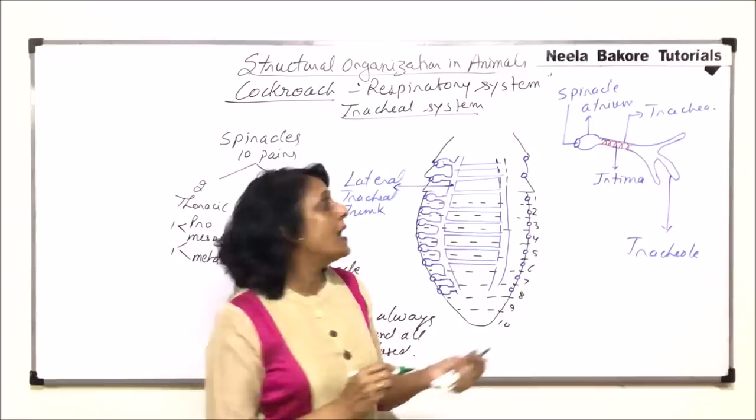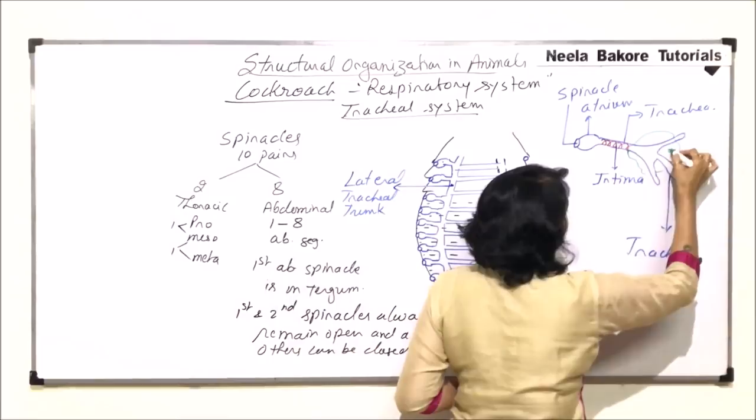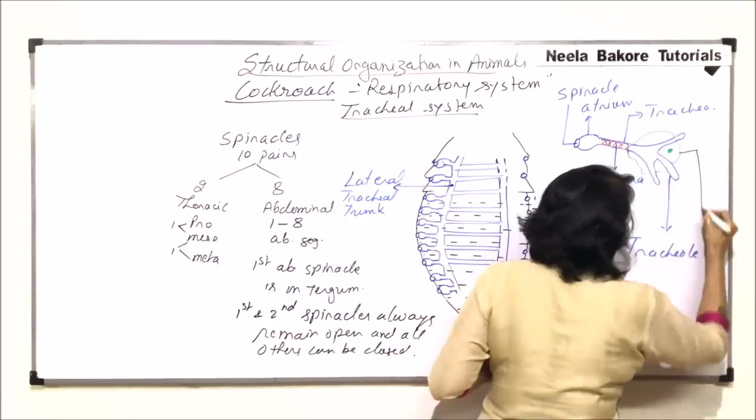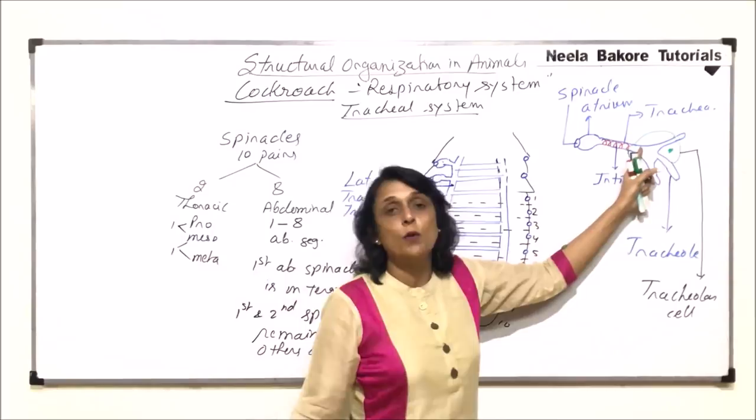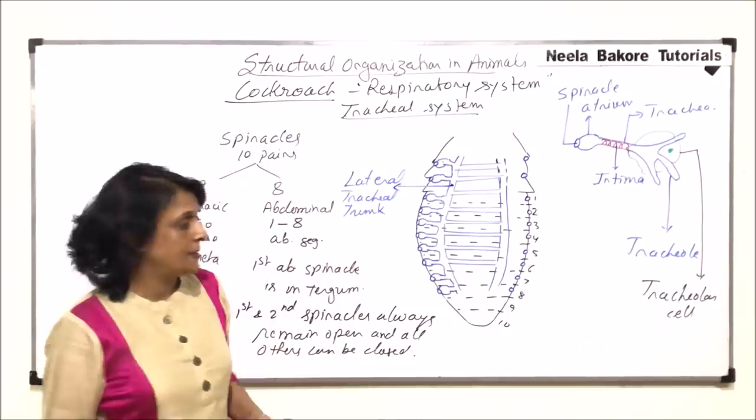Around the tracheals there is a large cell — the tracheolar cell — and we can see its nucleus as well. This cell releases some fluid which can fill inside the tracheolar tube. This fluid plays an important role in respiration.